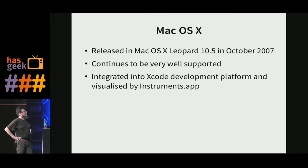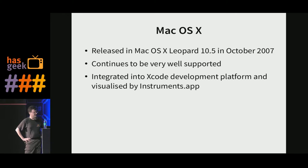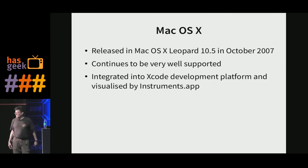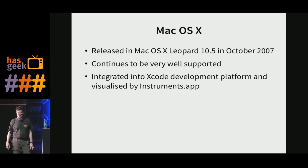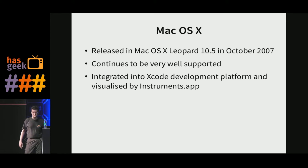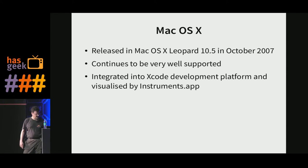Apple saw this and said yes, we want this. So they took it, and only two years later it was released in macOS Leopard 10.5. Since then, they've completely adopted it. They use it as the basis of a lot of instrumentation in the Xcode development platform. There's an app called Instruments that you might have seen if you're an Xcode user — it's all built on top of DTrace, and the DTrace implementation on macOS is actually quite mature these days.